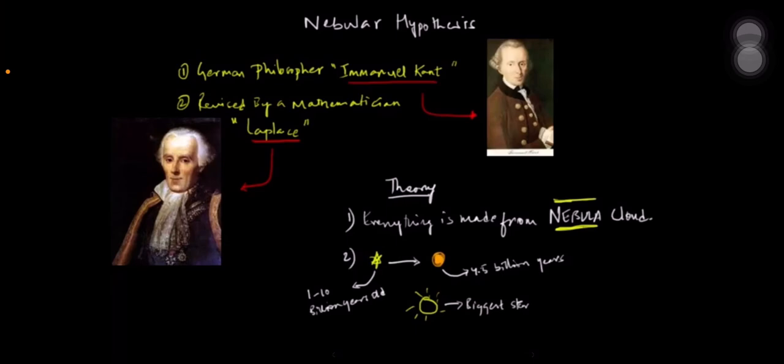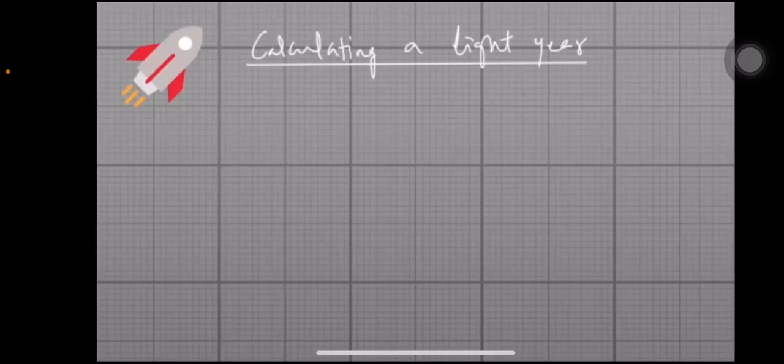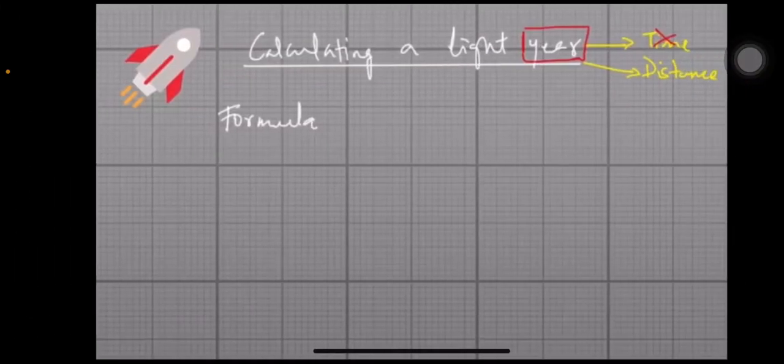Now let's go to the topic. A light year is not time — it is calculated by distance. There is another planet at a distance, for example Uranus, and we have to calculate the light year to reach it.